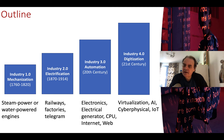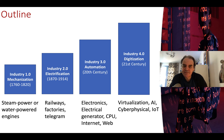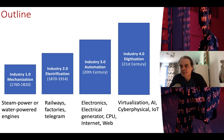Our industry has moved from what we could define as Industry 1.0 to Industry 4.0. Industry 1.0 was mechanization — steam-powered and water-powered engines brought forward that first wave of industry. The second was electrification, driven by railways, factories, and the telegraph. The third wave happened in the later part of the 20th century with the rise of electronics, electrical generators, CPUs, the internet, and the web.